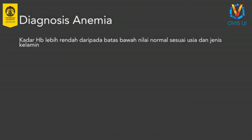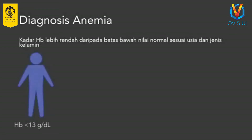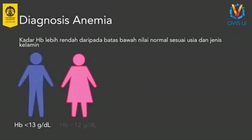Proses eritropoiesis dari pembentukan proeritroblast hingga menjadi normoblast memerlukan zat besi, asam folat, dan vitamin B12 yang berperan dalam maturasi sel. Diagnosis anemia ditentukan berdasarkan kadar hemoglobin yang lebih rendah daripada batas bawah nilai normal sesuai dengan usia dan jenis kelamin. Untuk laki-laki dewasa batas bawah nilai hemoglobin adalah 13 gram per desiliter, sementara untuk perempuan dewasa adalah 12 gram per desiliter.